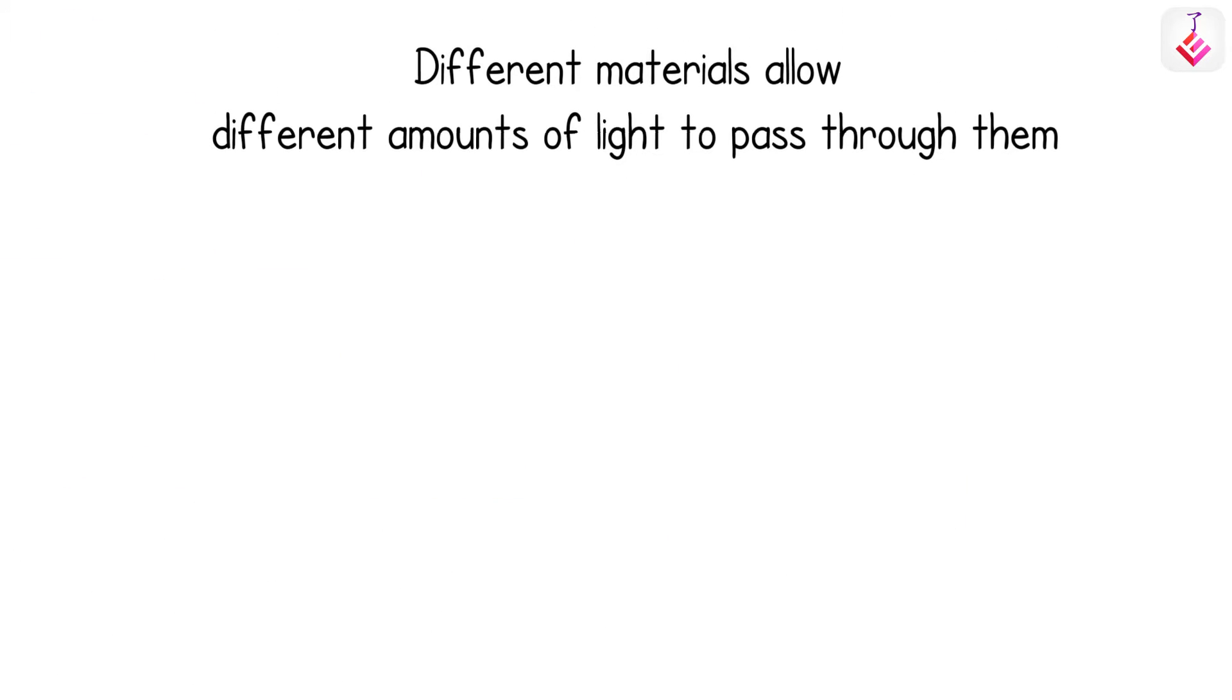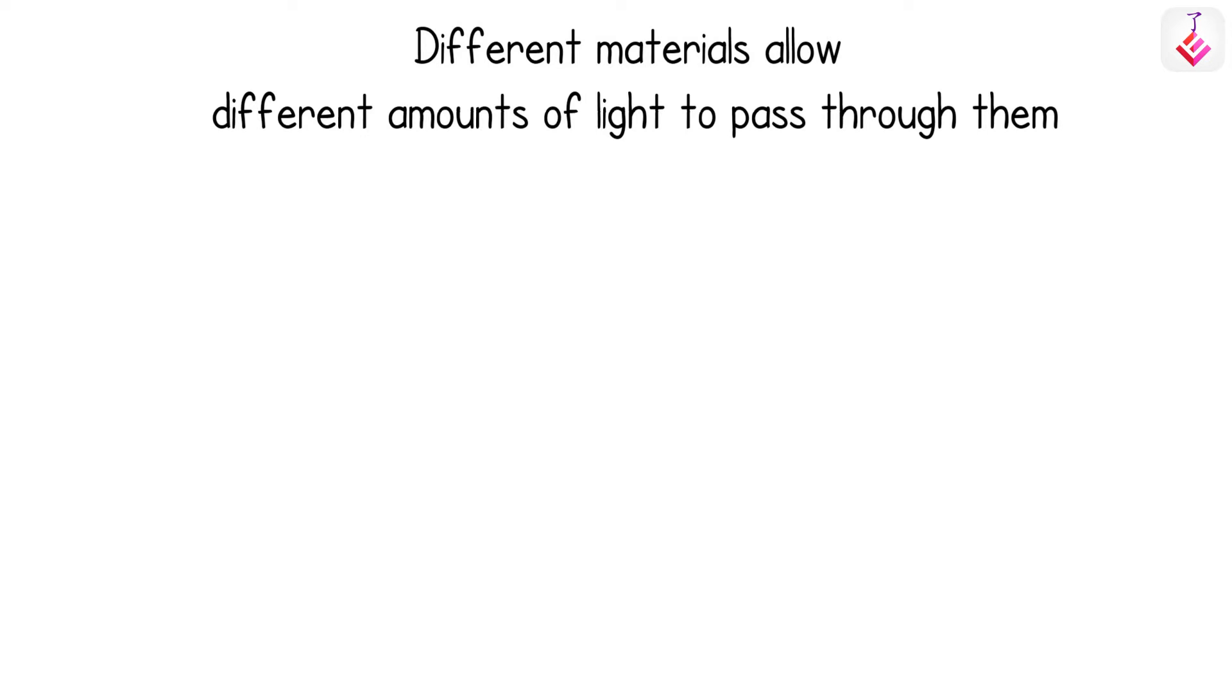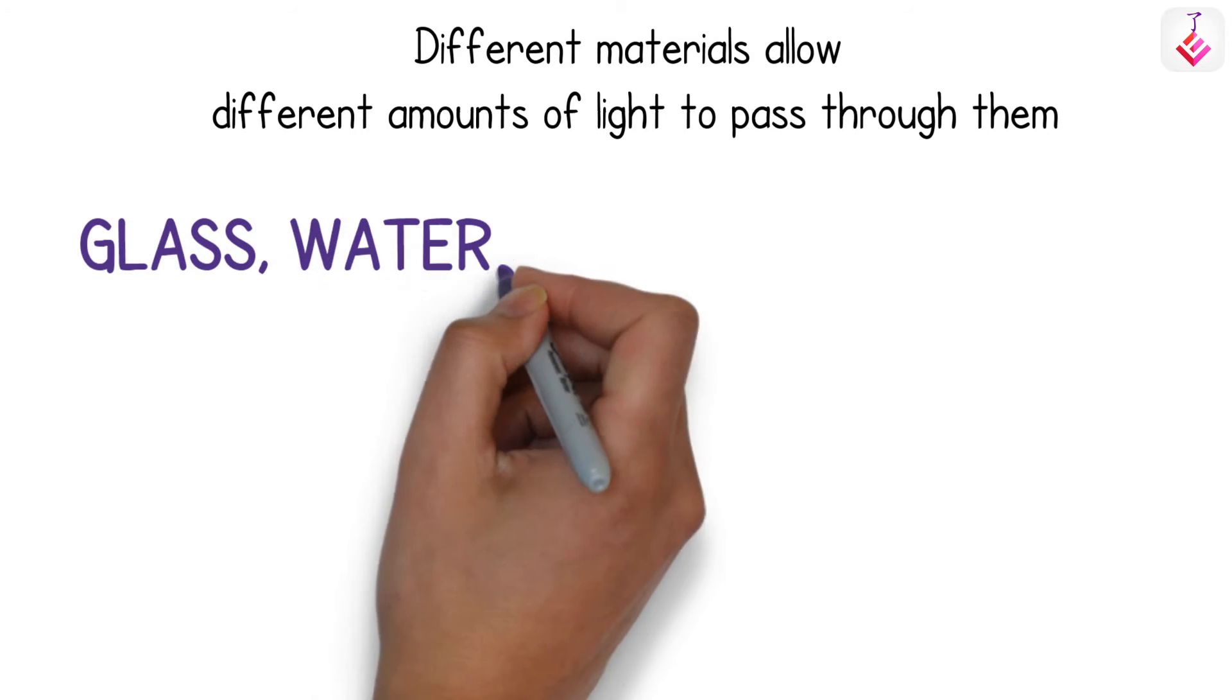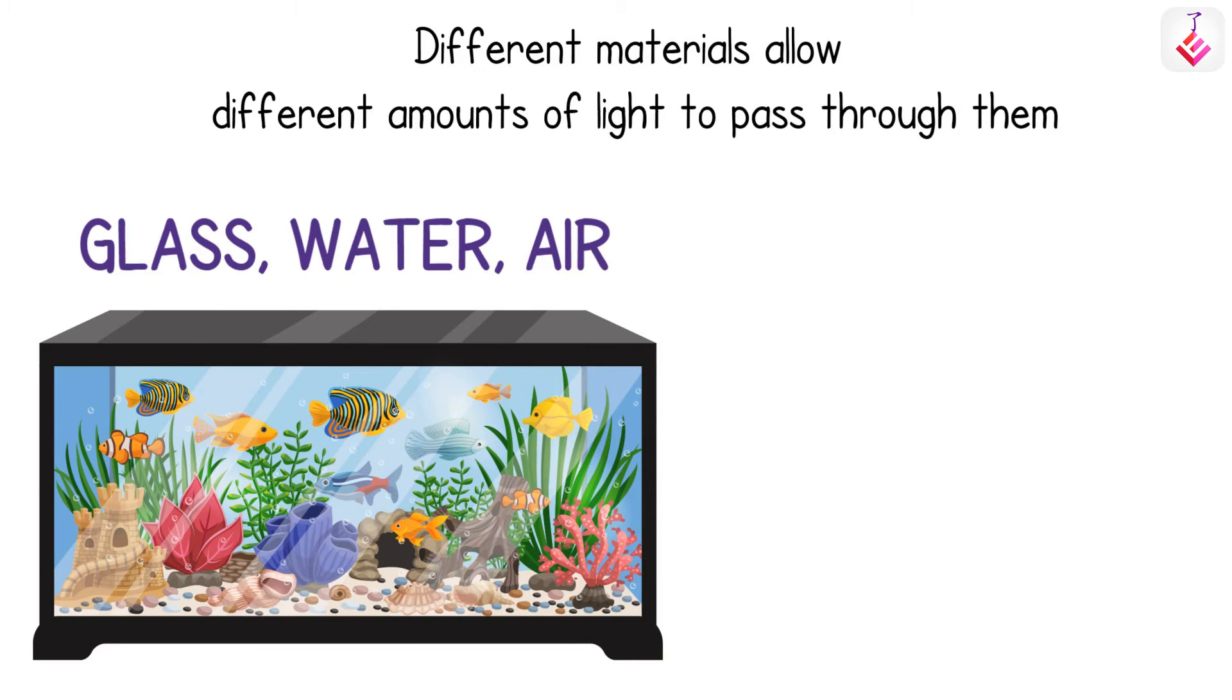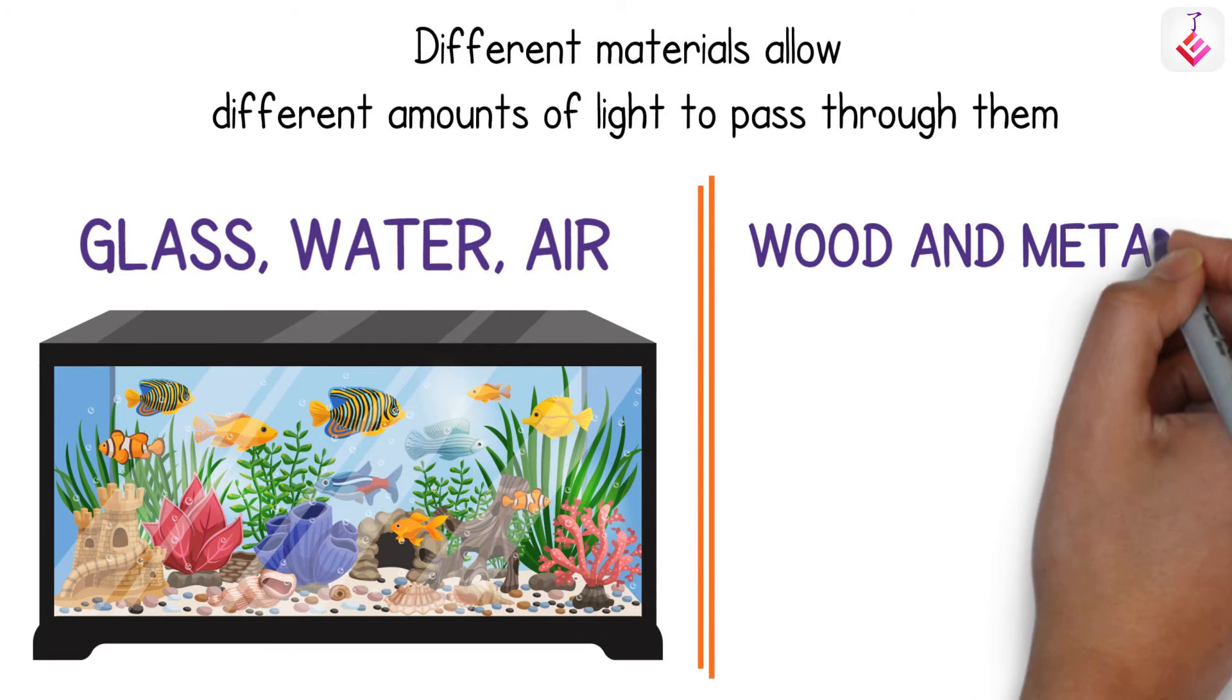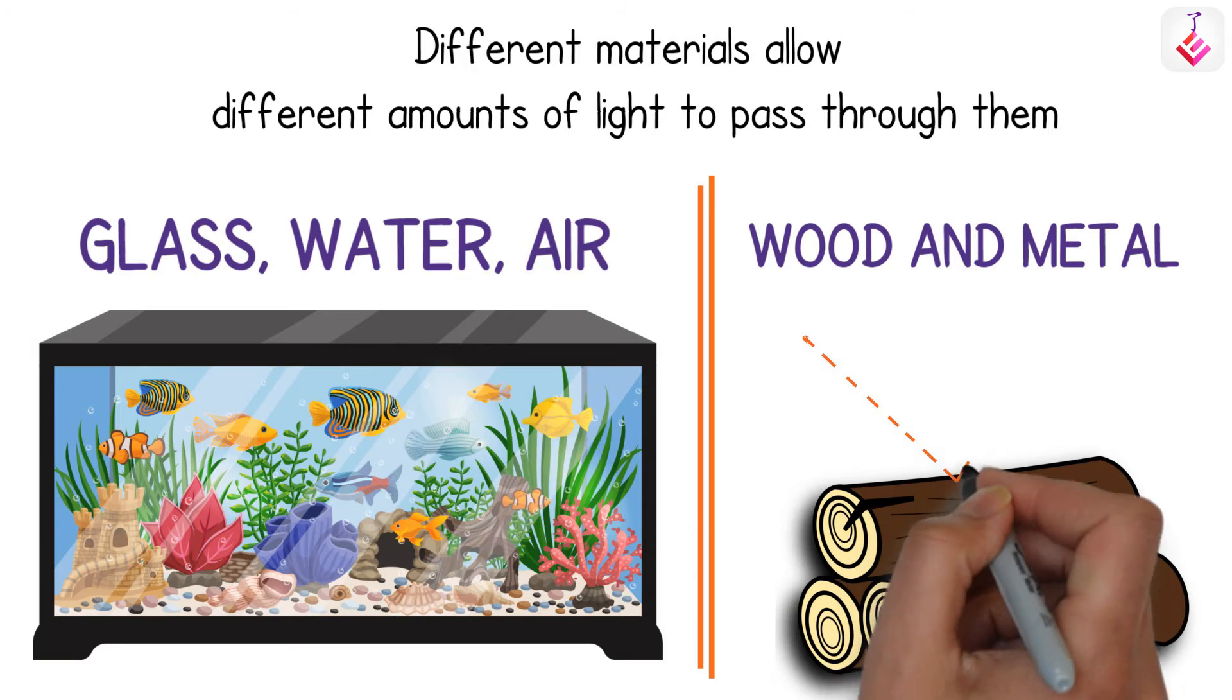Different materials allow different amounts of light to pass through them. For example, glass, water, and air allow most light to pass through them, that's why we can see through them clearly. Wood and metal do not allow light to pass through them, and we cannot see through them.